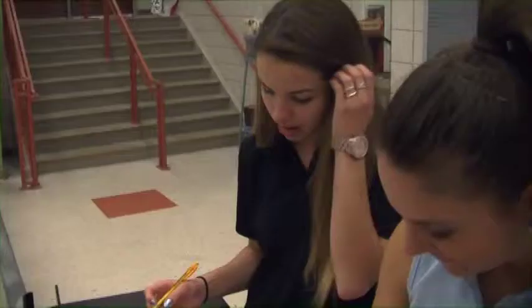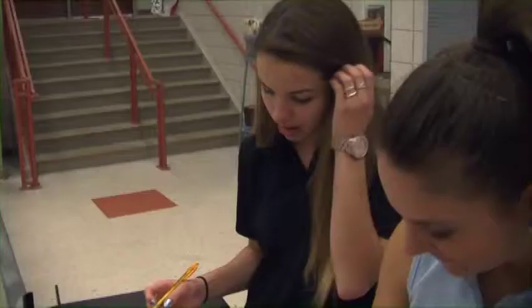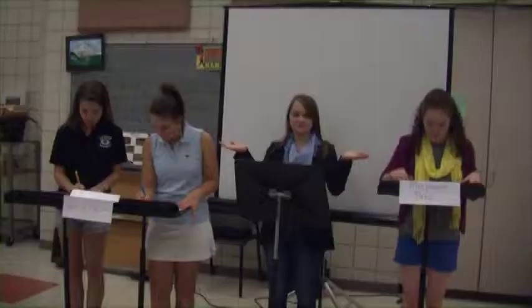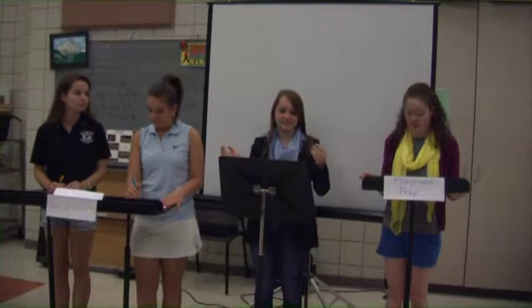This problem is a chain rule derivative. The derivative is cosine multiplied by the original, 3x plus 1, times the derivative of that, which is 3. So the answer is: the derivative is 3 cosine of 3x plus 1. Correct. Next question.